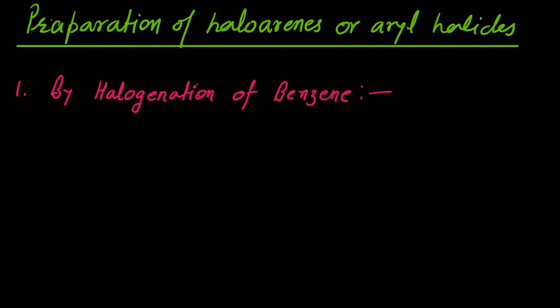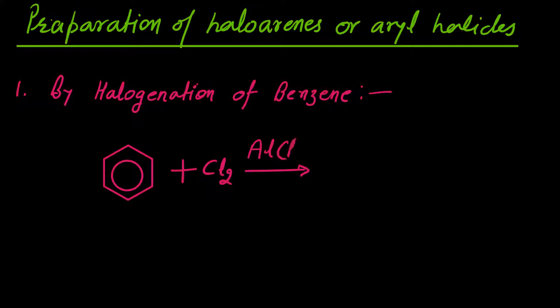The reaction is carried out in dark at ordinary temperature conditions in the presence of a Lewis acid as catalyst. For example, benzene reacts with a halogen — chlorine or bromine molecule — in the presence of Lewis catalysts such as AlCl3 or FeCl3. For bromination, AlBr3 or FeBr3 is used.